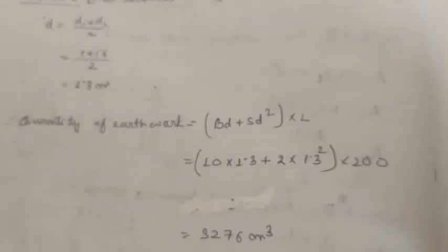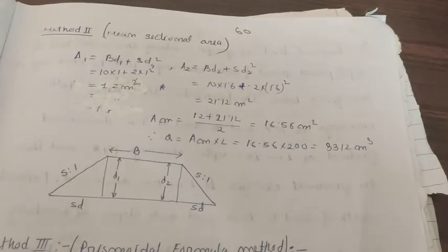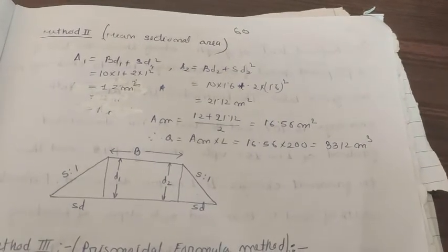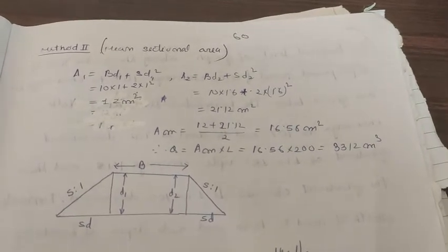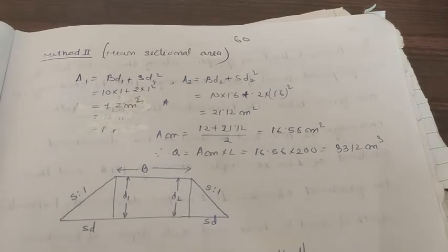What was the formula for finding quantity of earthwork? The formula is bd + sd² into L. You put the values and you get 3276 cubic meters. Now let us proceed with our second formula, mean sectional area method.